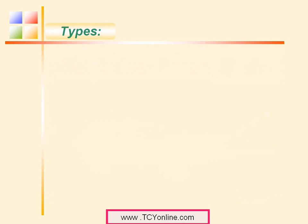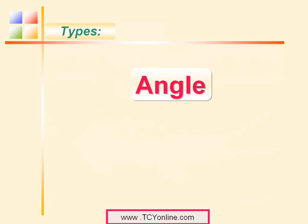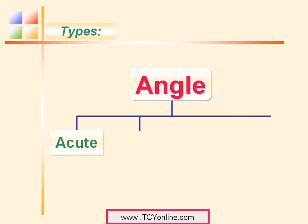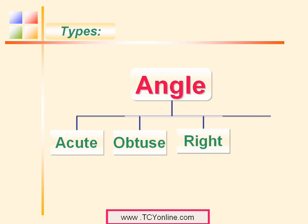Now let's learn about different types of angles. There are many angles, but let's focus on four important types: first is acute angle, next is obtuse angle, then we have right angle, and then we have straight angle. Let's learn about each of these one by one.